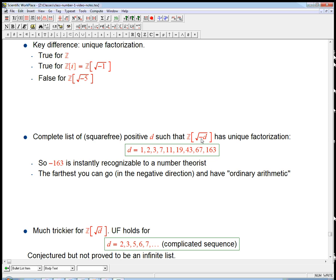So if I just look at all the square free positive numbers, such that if I take the negative of that number, take the square root to produce some multiple of i, adjoin it to Z, and I ask, does that ring,